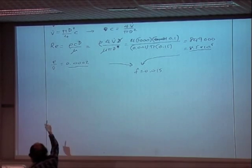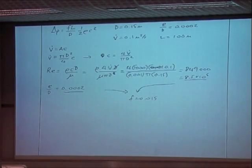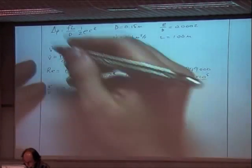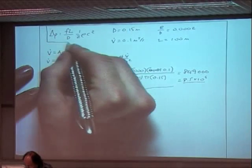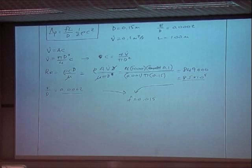So now we know everything for our equation. There's our equation. We've got F, our friction factor. We've got the length of the pipe. That was 100 meters. We've got the diameter, which is 0.15. We know what rho is. It's water, so that's 1000. And C we've worked out from this equation here.